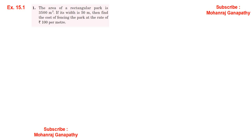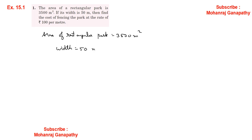Sum number 1: The area of a rectangular park is 3500 square meters. The width is 50 meters. We need to find the breadth. X meters is assumed. To find the cost of fencing, first the area and width are given, so we use: Area = Length × Breadth. That gives us 50 × breadth = 3500.